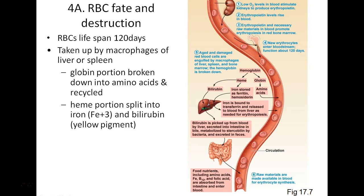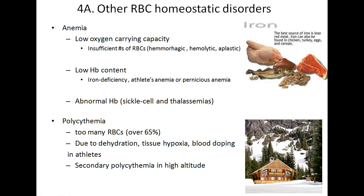From bile, bilirubin moves to urobilinogen in the small intestine, where it is either converted to stercobilin in the feces or to urobilin excreted in urine — hence urine's yellow pigment. Now let's turn to homeostatic imbalances: anemia. Anemia is any condition in which either the percentage of red blood cells is lower than normal, or there is a decreased oxygen-carrying capability of the blood due to hemoglobin abnormalities.